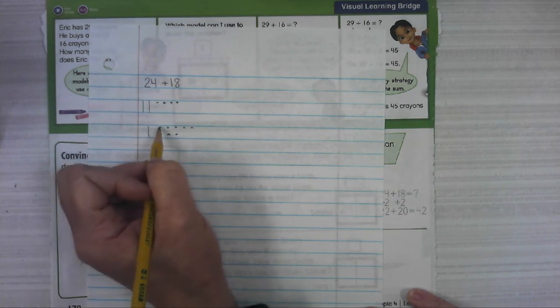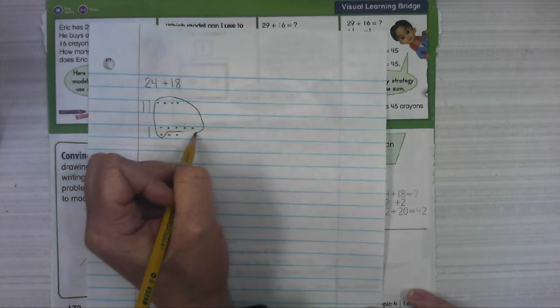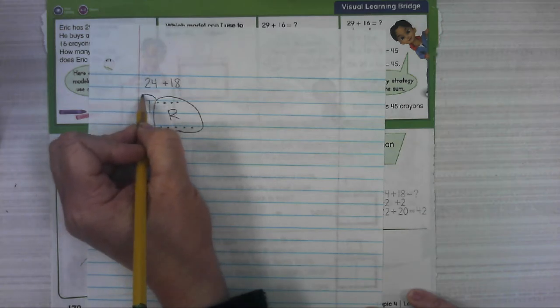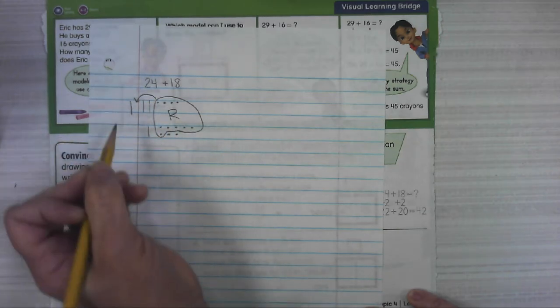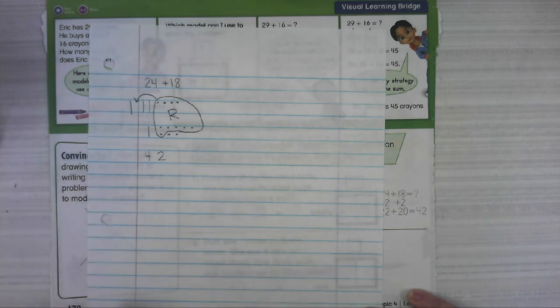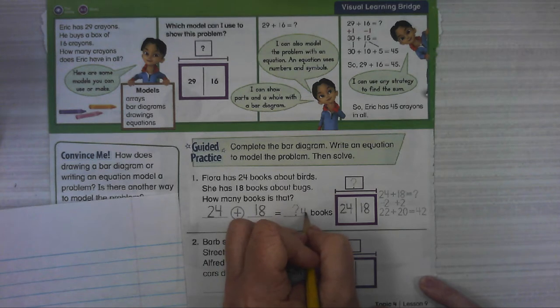One, two, three, four, five, six, seven, eight, nine, ten. I'm going to regroup this over here to the tens place. Now I've got four in the tens and two in the ones. That's funny, that was our last sum. So 42 books.